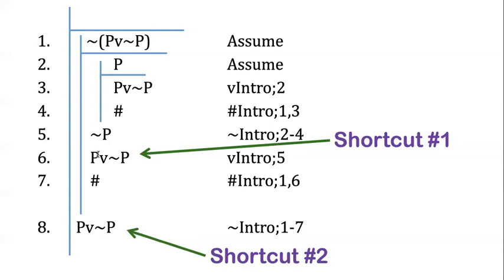So the first shortcut I take is, as soon as I get not P, I build the disjunction here. I don't do the five-step plan again, but I just skip right to the sentence that I'm going to do, the sentence that's the opposite of my original assumption.